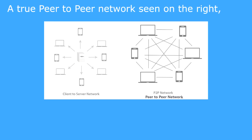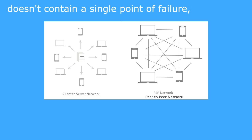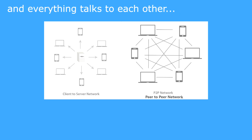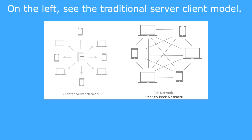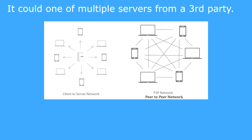A true peer-to-peer network, seen on the right, doesn't contain a single point of failure and everything talks to each other. On the left, see the traditional server-client model — it could be one of multiple servers from a third party.